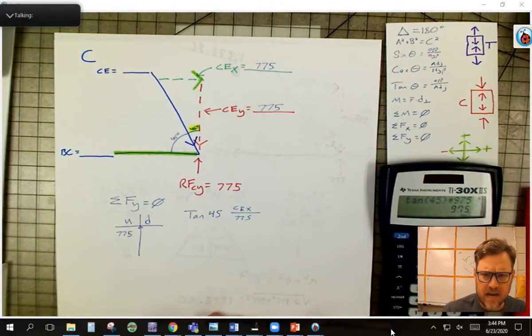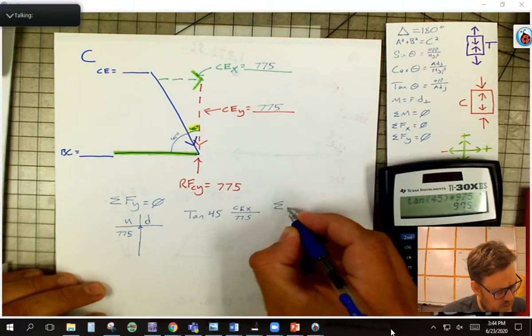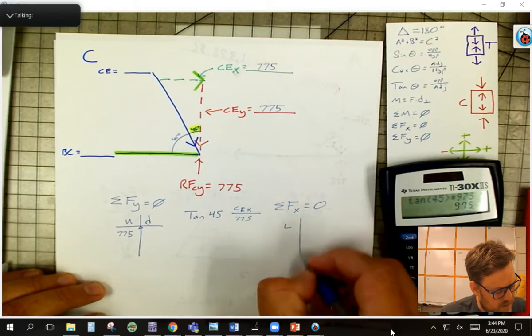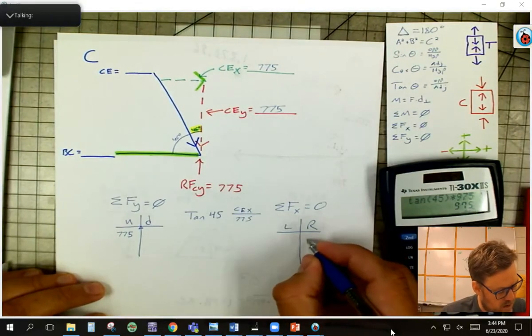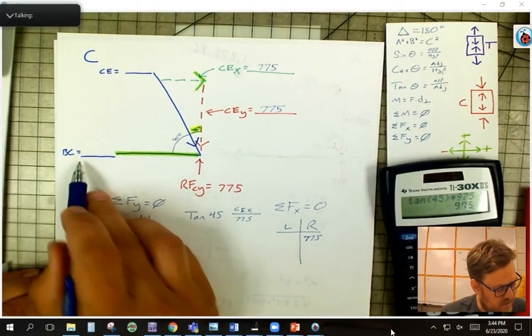So now when I look at this guy, I have two things going in the X. Some of the forces in the X have to equal zero. Left, right. Well, this guy we know is going right. It's 775. Well, there's only one other thing, line segment BC.